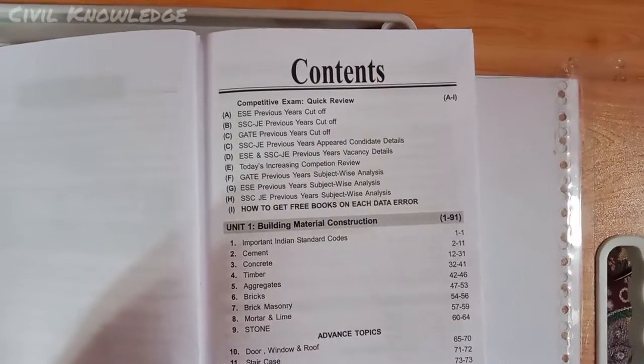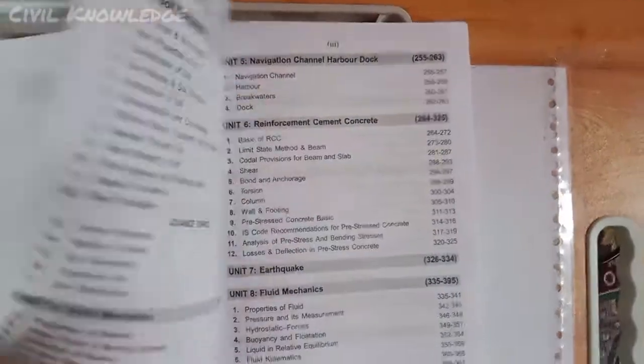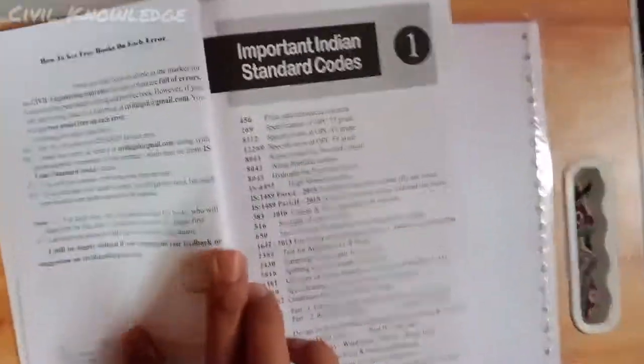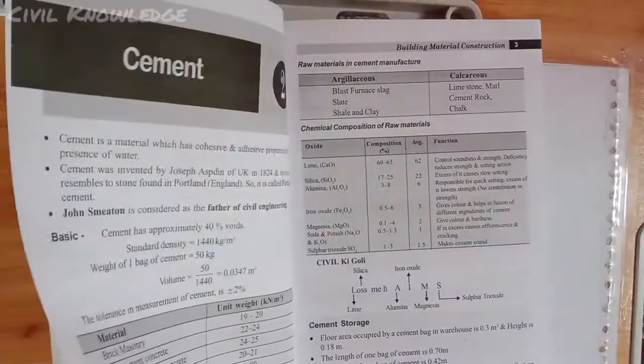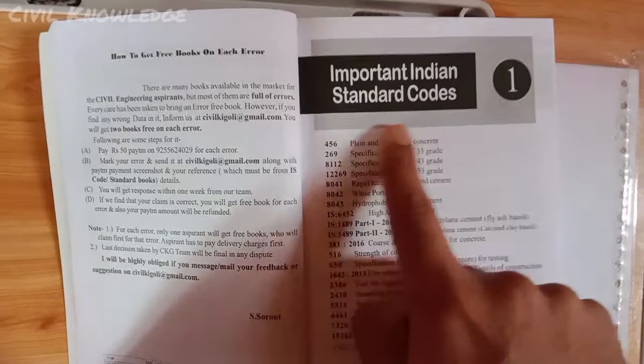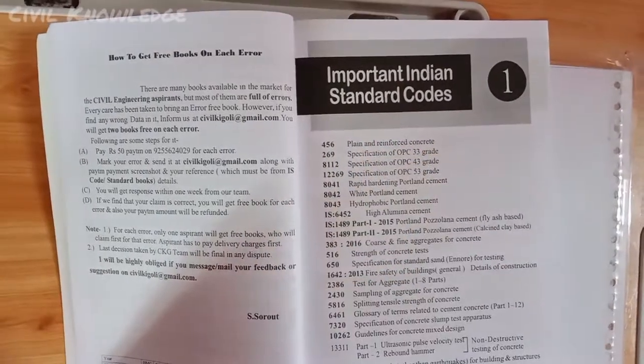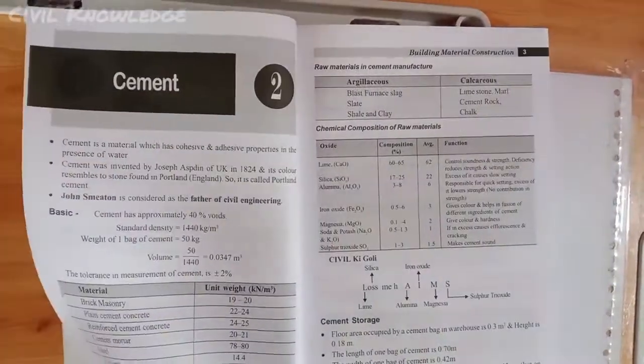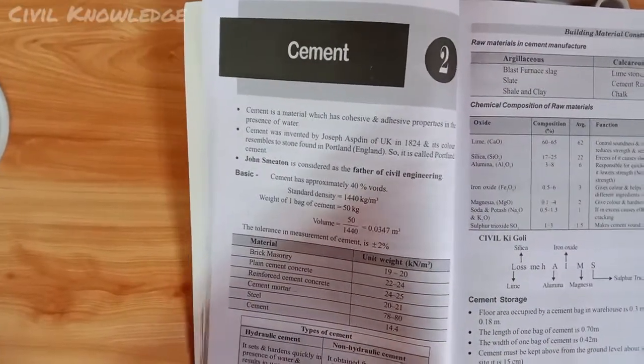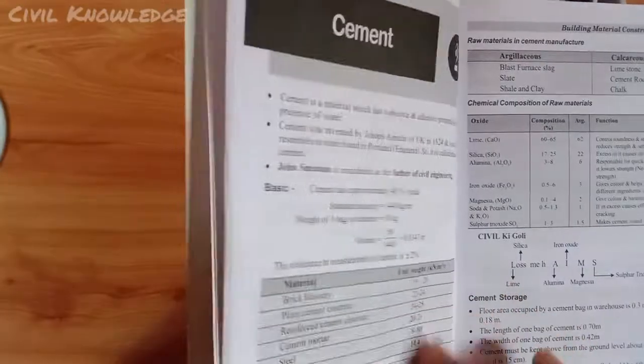Now let's check what is inside the subject-wise thing. The first chapter is Building Material Construction. In this book you can check out the important Indian Standard Codes are given, and then the topic-wise content.